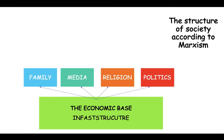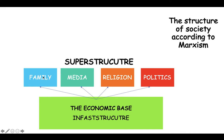The structure of society according to Marxism: Marxists see society as having a hierarchy, but a very unfair and unequal one that only serves those at the top — the superstructure. The superstructure filters its ideologies down through institutions like the family, media, religion, and politics to the economic base. The infrastructure and economic base are made up of our workers — manual workers, retail workers, everyday people.